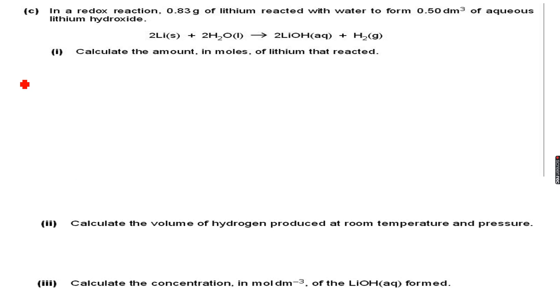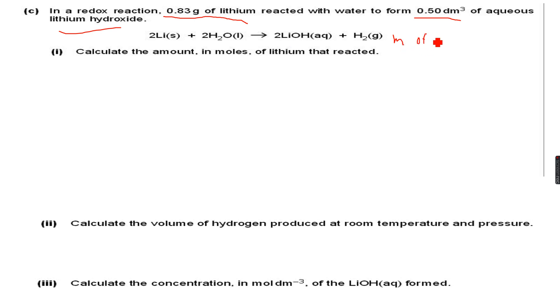Let's move to exercises, as we have covered all the key tricks and formulas for mole calculations. The first question involves a redox reaction — we'll cover redox reactions later, so don't worry about that now. In this reaction, 0.83 grams of lithium reacted with water to form 0.50 dm³ of aqueous lithium hydroxide.